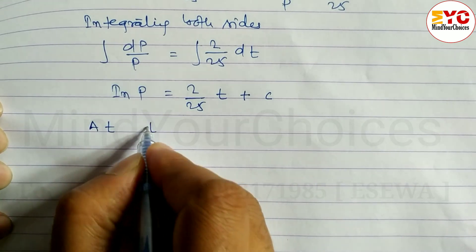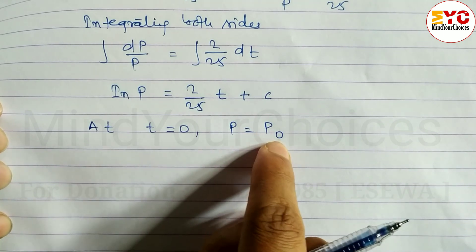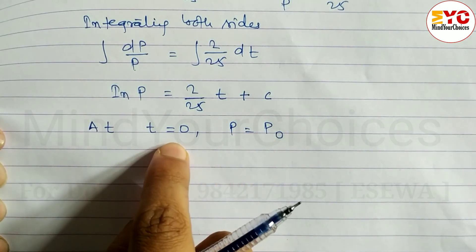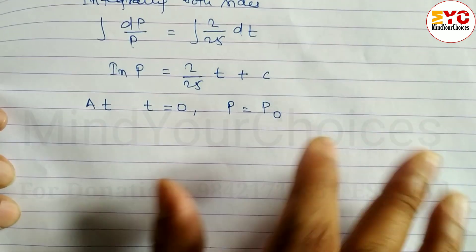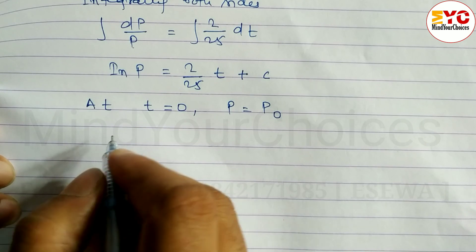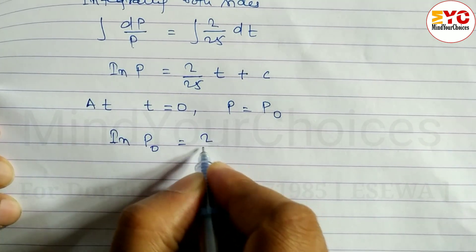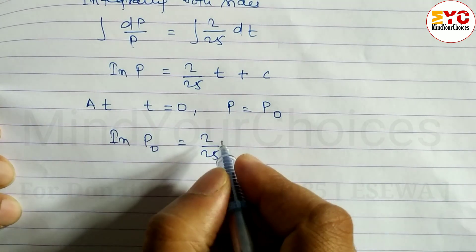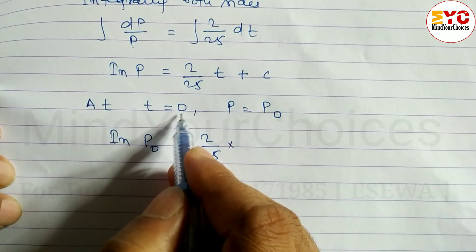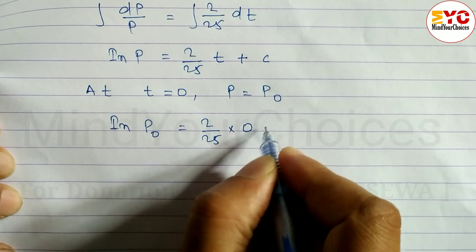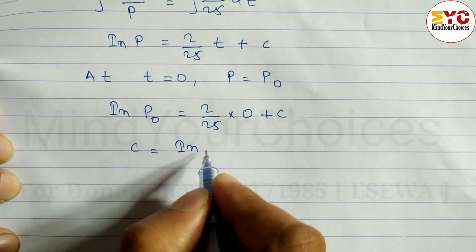Applying the initial condition: when t = 0, p = p0. Substituting into equation 1: ln p0 = (2/25)(0) + c, so c = ln p0.